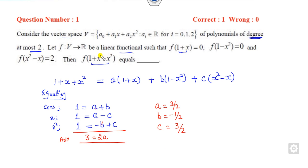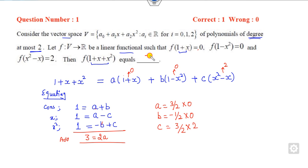Now your target is to find f of the functional value. Substituting the values: this value is 0, this value is 0, and this value is 2. Multiplying: 0, 0, 2 — so the right answer is 3.